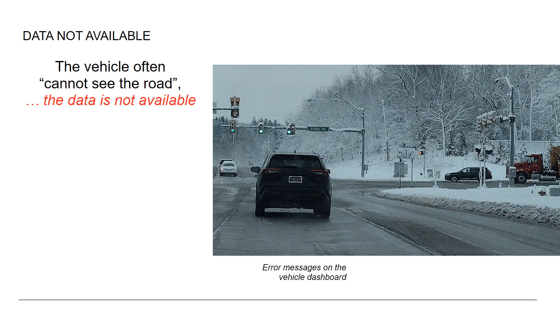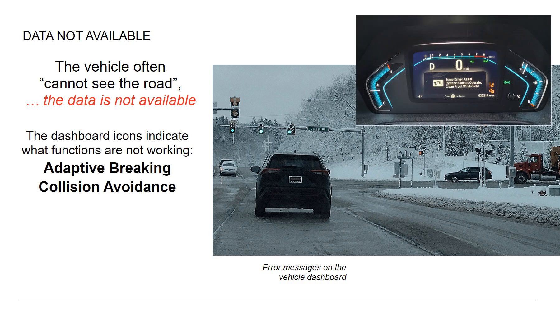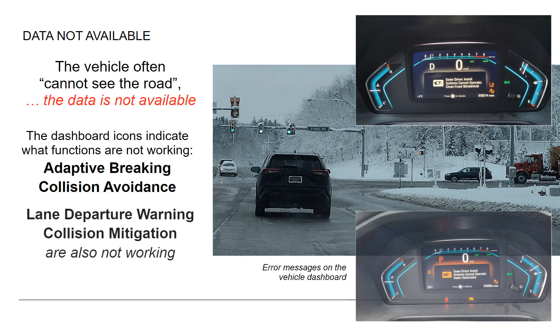The vehicle often cannot see the road, so the data is not available. When the radar and camera are offline, many other functions also may not work.